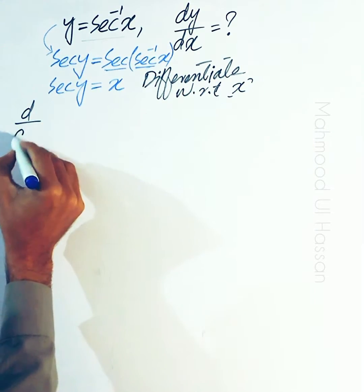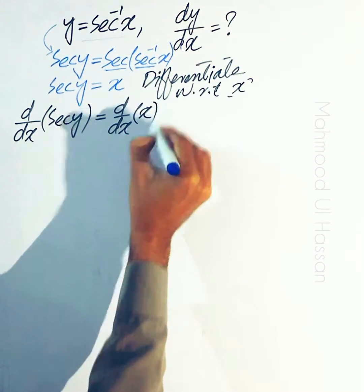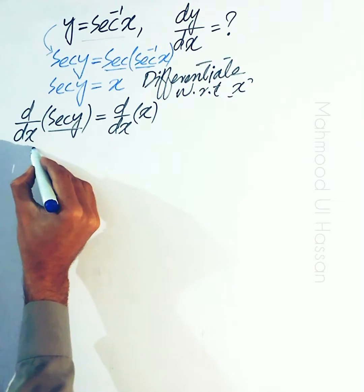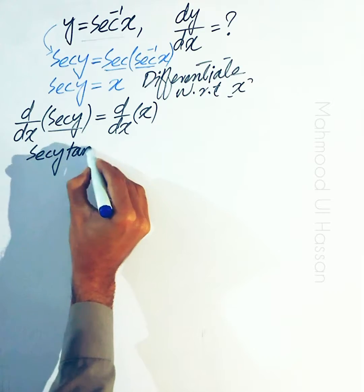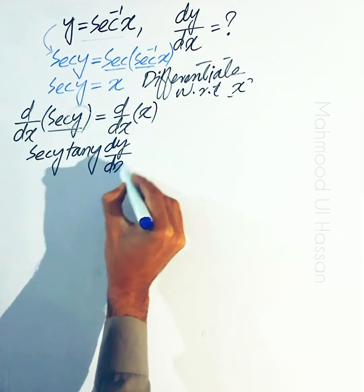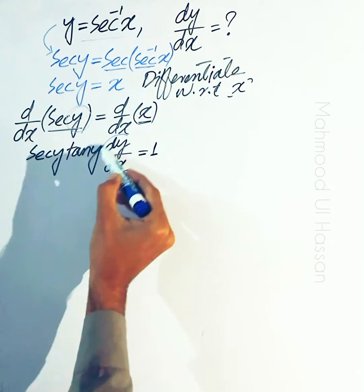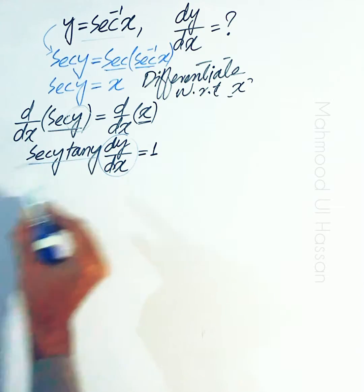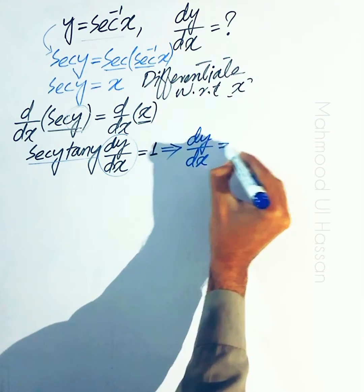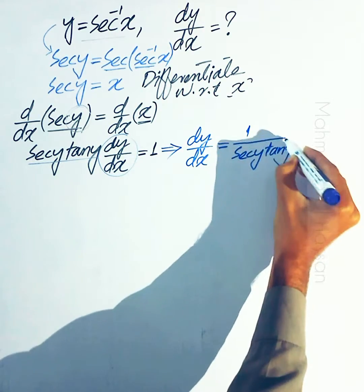So d over dx of secant y is equal to derivative of x. We know that derivative of secant y is secant y times tangent y, that is secant y into tangent y, and again by chain rule we multiply by dy over dx. And derivative of x is 1. We need to find dy over dx, so divide both sides by secant y into tangent y.